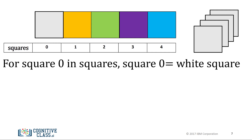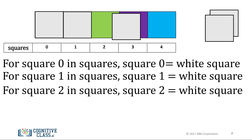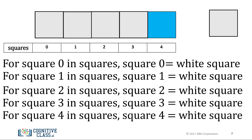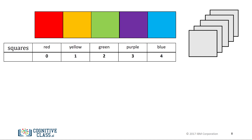Similarly, for the next square, we can say: for square 1 in squares, square 1 equals white square. For the next square, we say: for square 2 in squares, square 2 equals white square. We repeat the process for each square. The only thing that changes is the index of the square we are referring to.